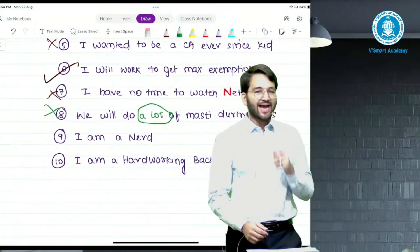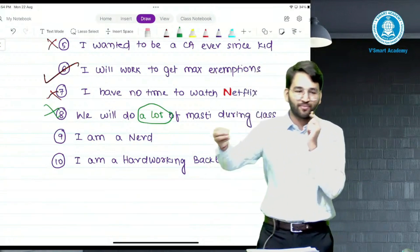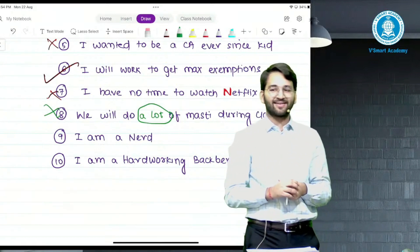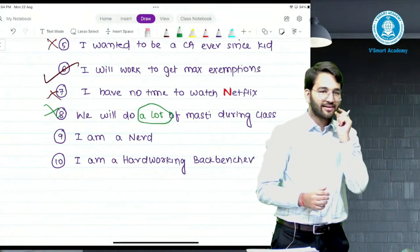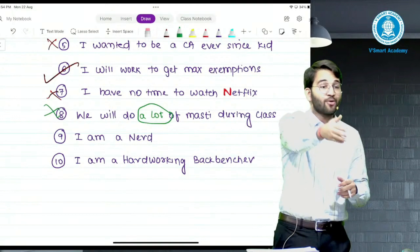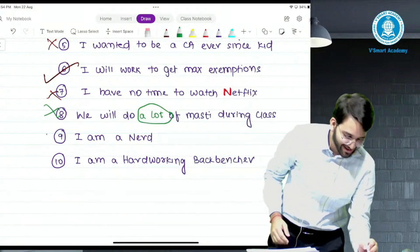Ninth, I am a nerd. Nerd means what? Bookworm. Bookworm means someone reading books all the time. I am a nerd - rank holder. Yes, I am not a nerd.